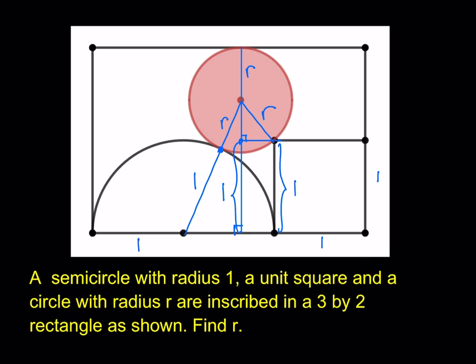A couple of things that are interesting: what about this length here? I'll call it x. Since the radius of the semicircle is 1, this piece is going to be 1 minus x because their sum is 1. I still need the height of this small triangle. This piece is 1, and the whole thing needs to be 2 — we're given a 2 by 3 rectangle, height 2. So this means 1 minus r, and this piece is x.